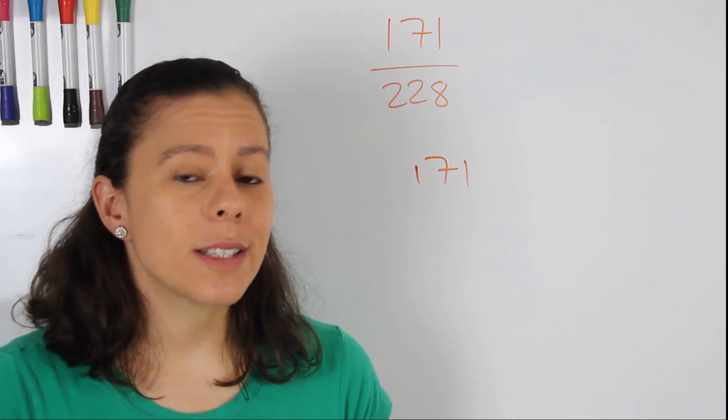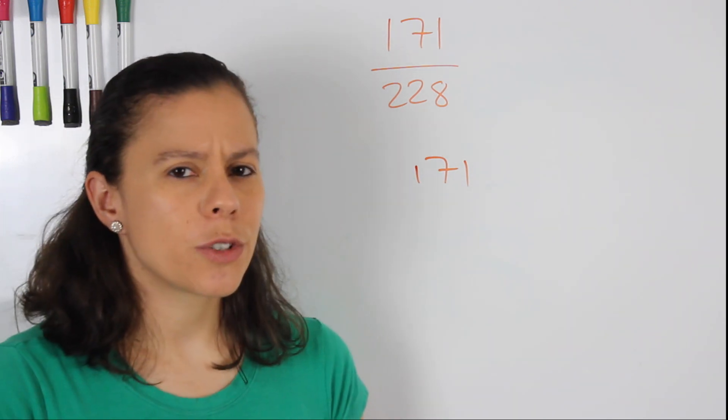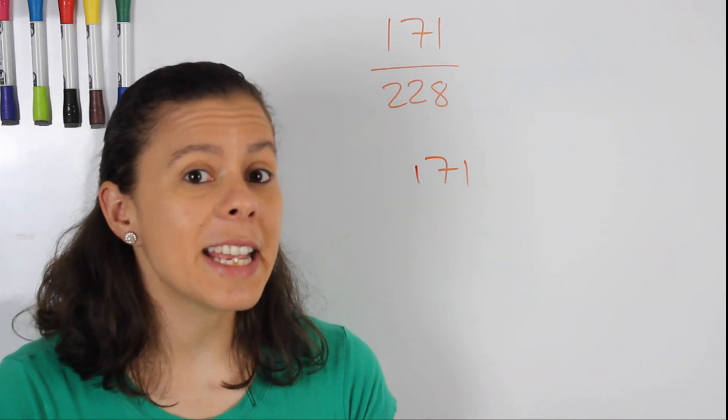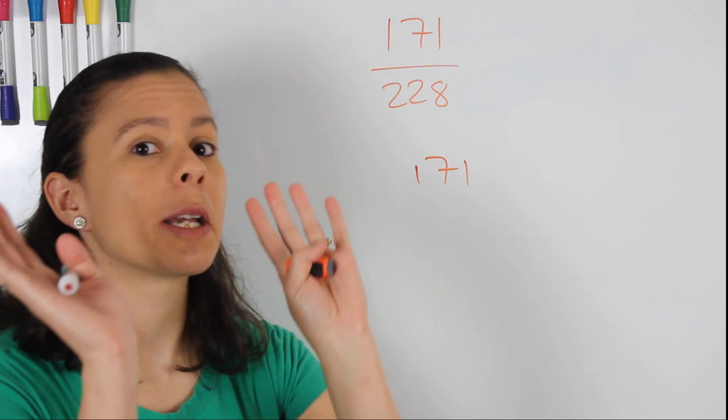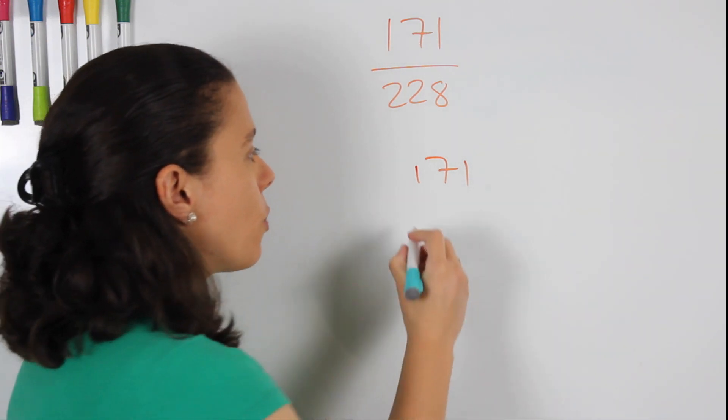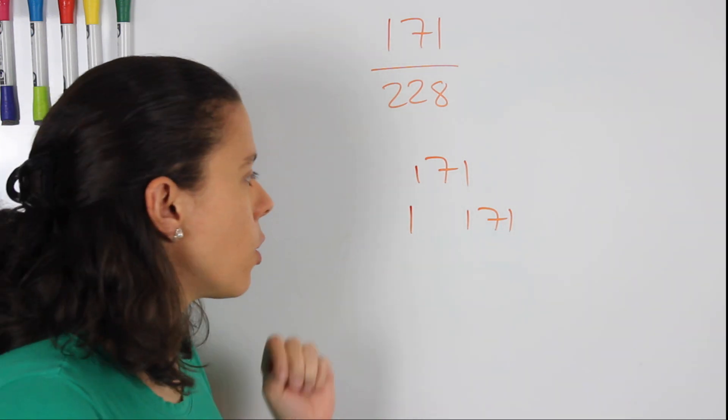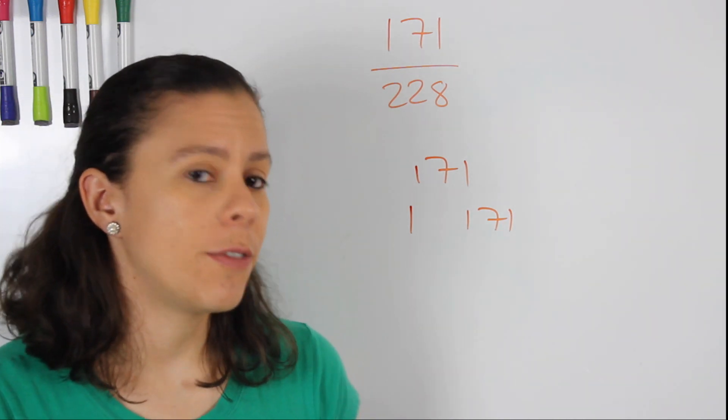Now, we know that 171 is an odd number, which means that it's not going to have any even factors. So we can skip all of those. So we start with 1 and 171. Then we go to 3. It would be 3 and 57.